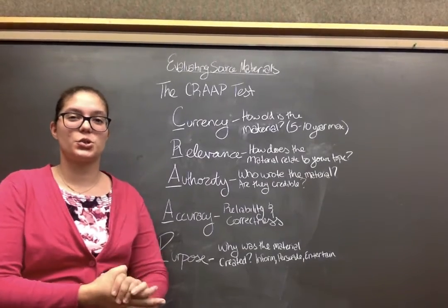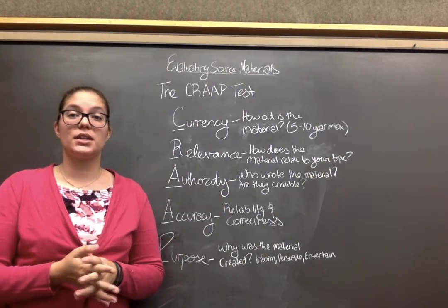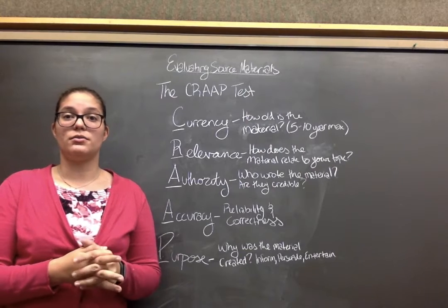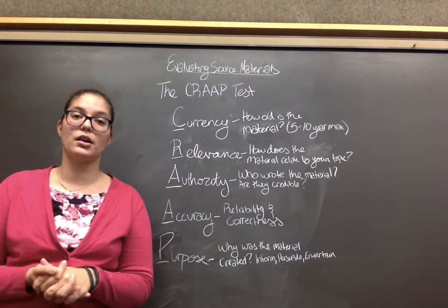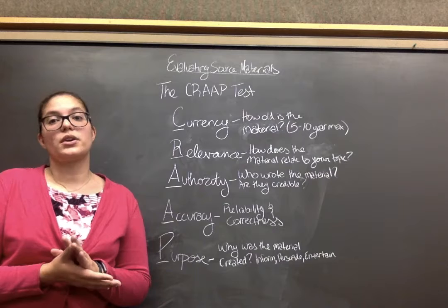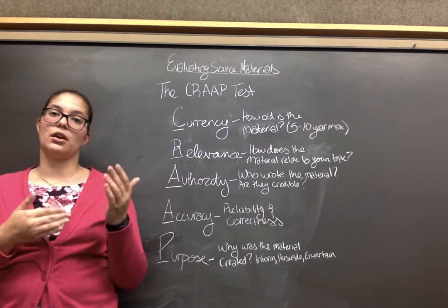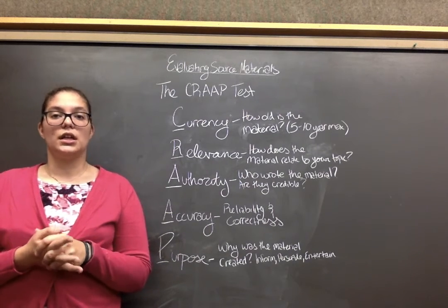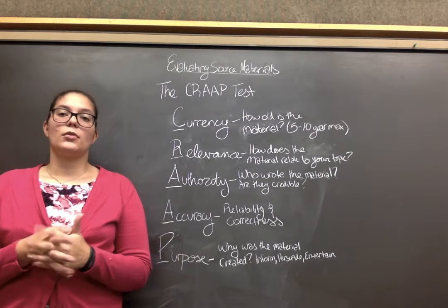Hello everyone. This is a short video on how to properly evaluate your source materials. Good places to find source materials are Google Scholar. All of the materials produced by Google Scholar will be peer-reviewed articles and journals, which will be scholarly and a good source. Other places to find relatively credible information are .gov and .org sites.